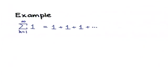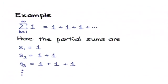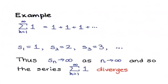Let's look at one more example. In this series all the terms have the value one, so we're trying to calculate one plus one plus one and so on, and this series diverges to plus infinity. Looking at the partial sums: the first partial sum is one, the second partial sum is two, the third partial sum is three, and so on. We can see that s_n tends to infinity as n tends to infinity, so the sequence of partial sums does not converge and the series diverges — more precisely, it diverges to plus infinity.